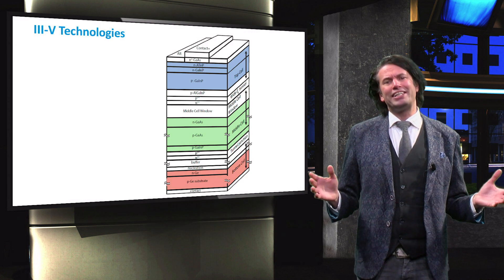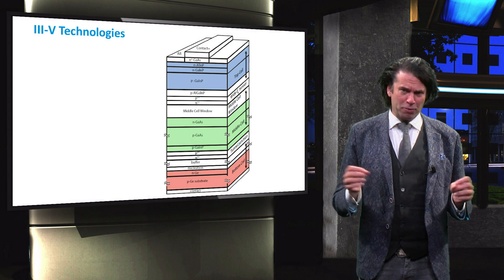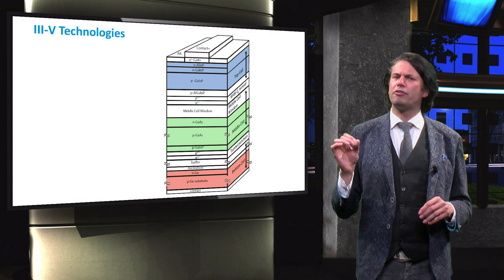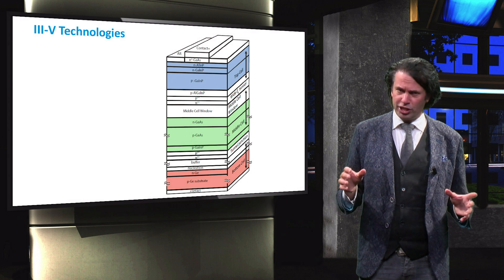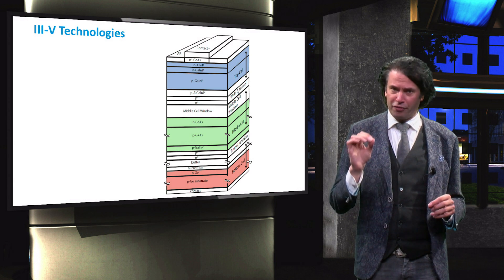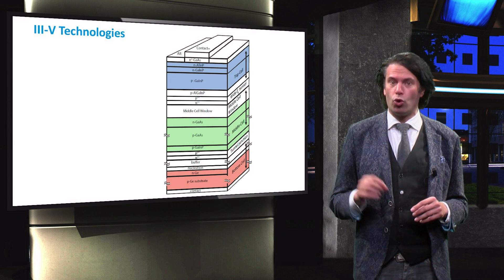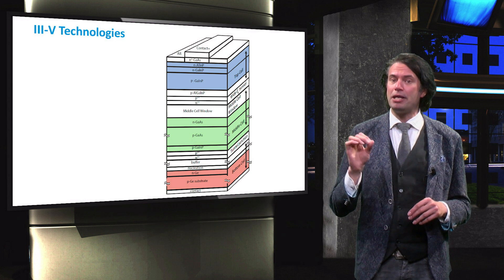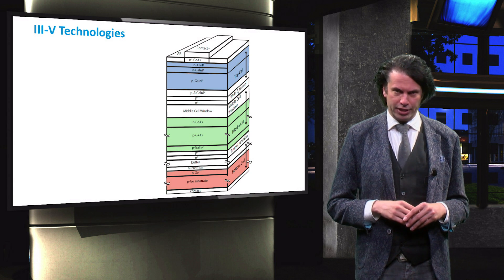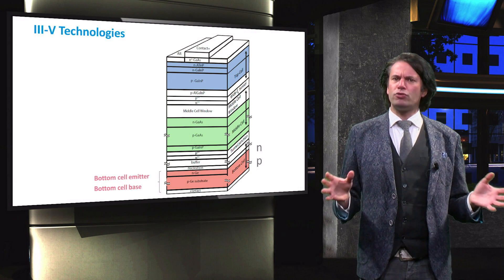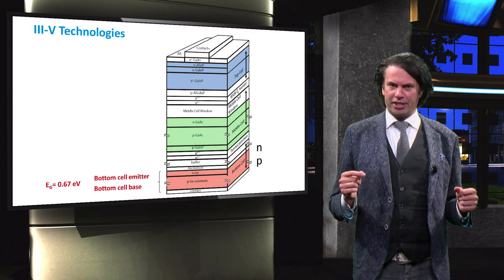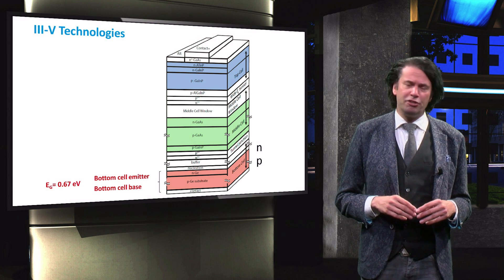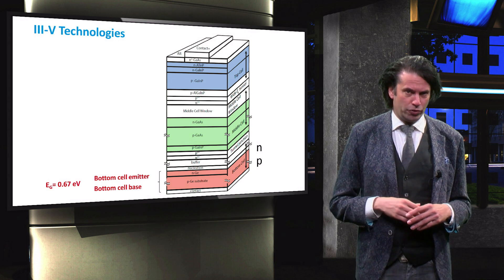We will start with the design of a typical III-V triple junction cell. Such a triple junction device consists of three separate PN junctions or cells. As substrate, a germanium wafer is used, and from this wafer the bottom cell is created. Germanium has a band gap of 0.67 eV.